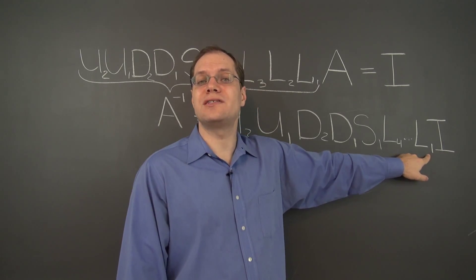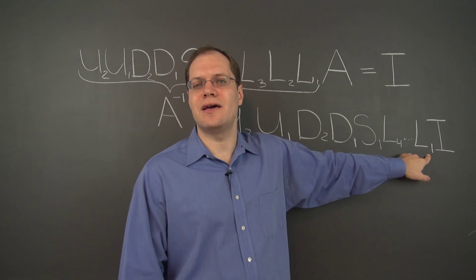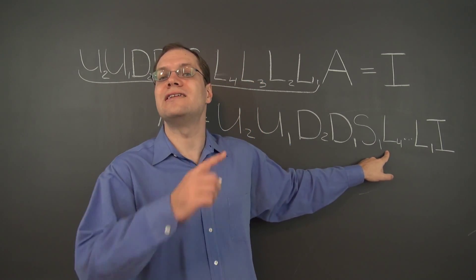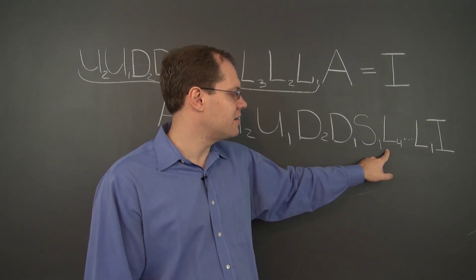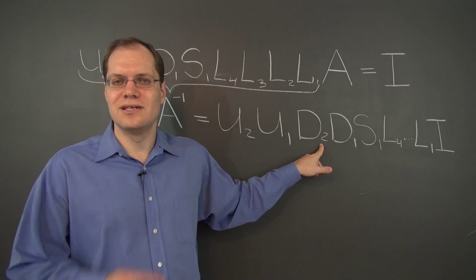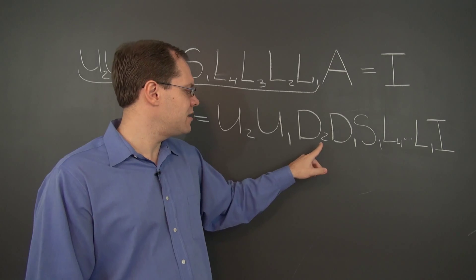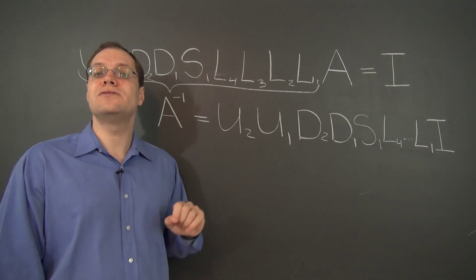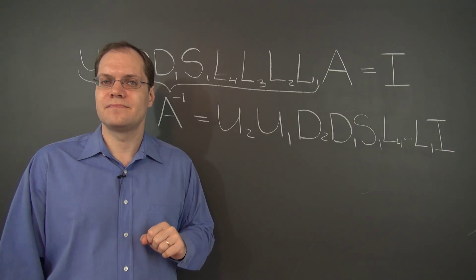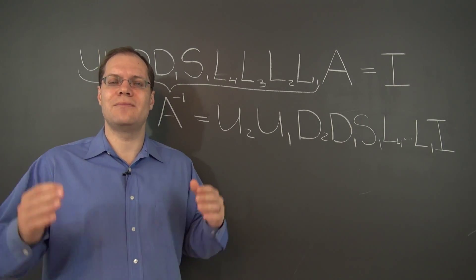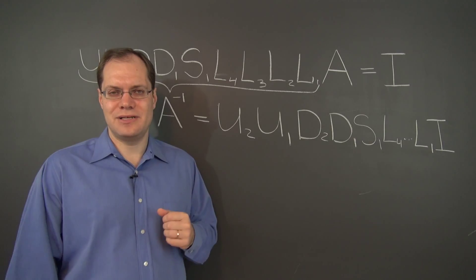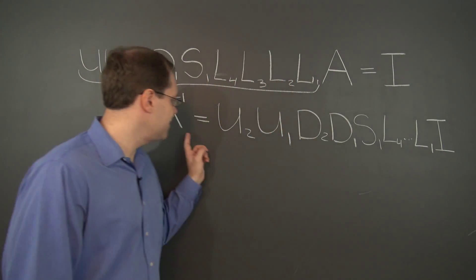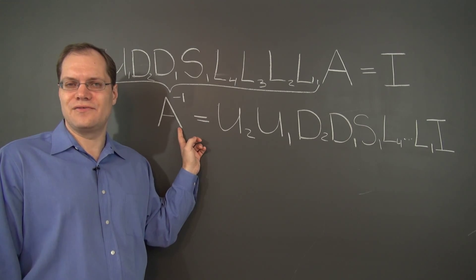Apply the first step of Gaussian elimination that you had previously applied to A. And then the second, third, and fourth. And then switch the rows in the exact same way you did for the matrix A. And then scale the rows in the exact same way you did for the matrix A. And finally perform the same Jordan back substitution as you did for the matrix A. So perform all of the same steps of Gaussian elimination starting with the identity matrix and that will give you the matrix A inverse.